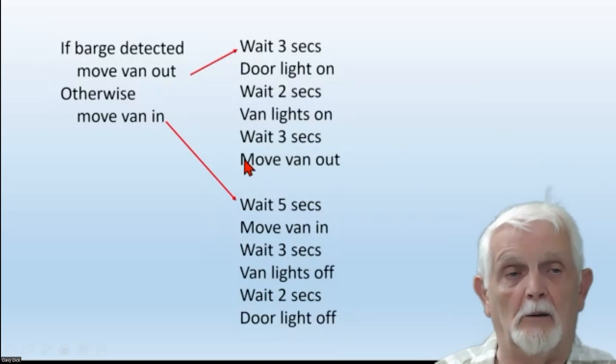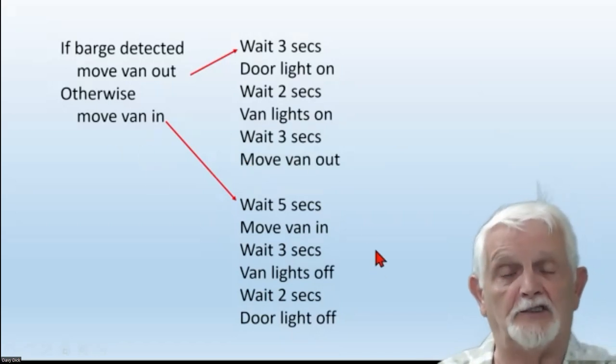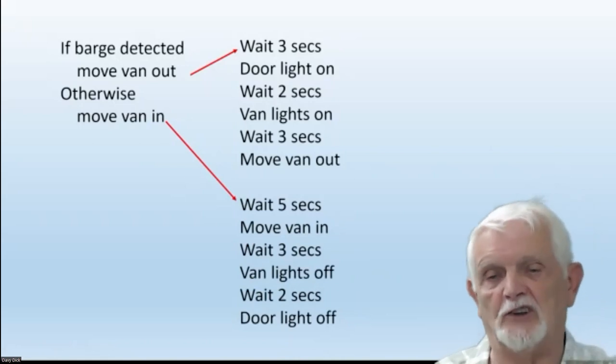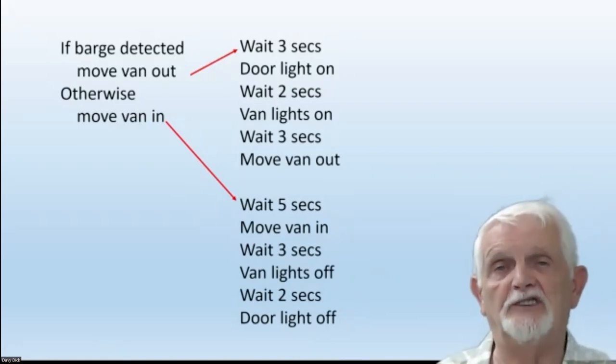We could have used a sequencer, I suppose, but since we had to program the PIC anyway, I just made it do that. And of course, once the barge leaves, we do the thing in reverse. The van goes back into the building, the building lights go out and so on. So it's fairly simple to code. And I think you'll agree it's an interesting add-on to the existing layout.